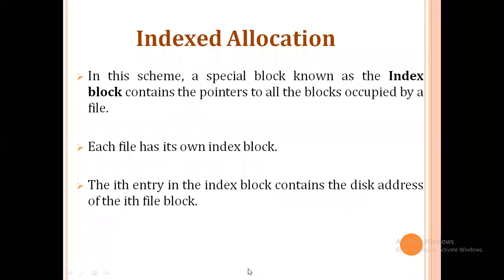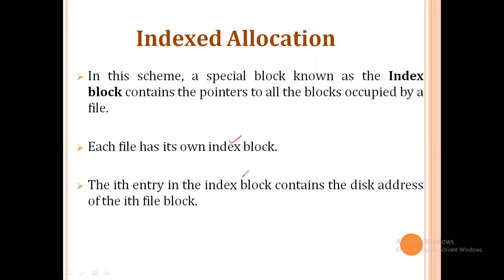Next we have index allocation. In this scheme, a special block known as an index block contains pointers to all the blocks occupied by the file. Every file has an index block, and that index block stores the disk addresses of all the file's data blocks.